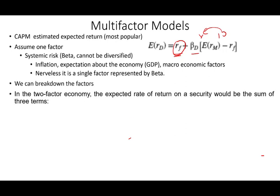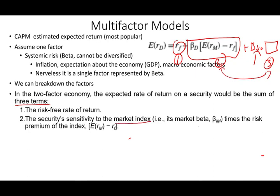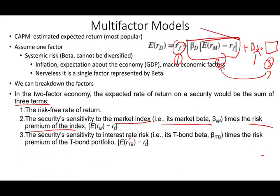In a two-factor model, the expected return of the security is the sum of three terms. One is the risk-free rate. Then we add a beta for the market index times the risk premium of the index, plus a second beta — for example, for the T-bond — representing the interest rate, times the risk premium of the T-bond portfolio. So now the expected return is a function of the market beta and the T-bond beta — two factors rather than one. The first formula is a single regression; with two factors, we have multiple regression.